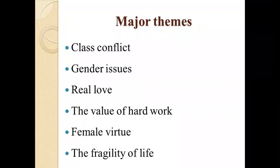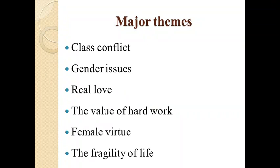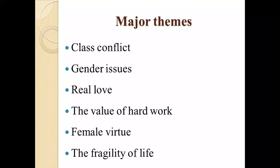Another theme is real love. Gaskell emphasizes Mary's realization of the difference between infatuation and love. Although Harry wants to possess Mary and she knows that marrying him would make her life more comfortable, Mary quickly comes to realize that Harry doesn't love her the way Jem does. Jem offers Mary solid, real, and unconditional love. Harry's affection might be flashy, but Jem makes quiet sacrifices to ensure that Mary is always happy. Mary's choice of love over infatuation represents her maturation from childhood to adulthood.